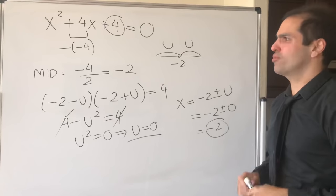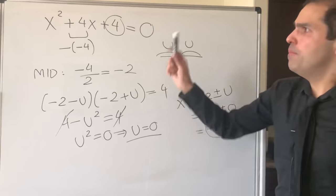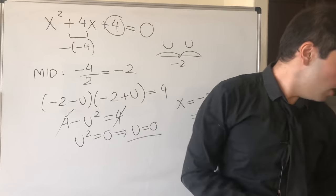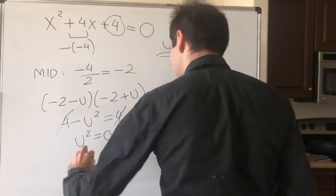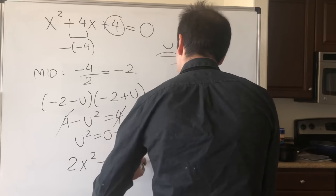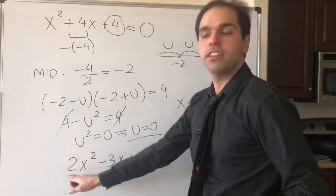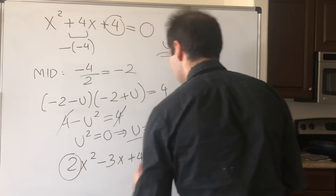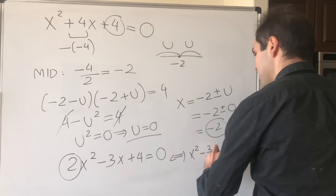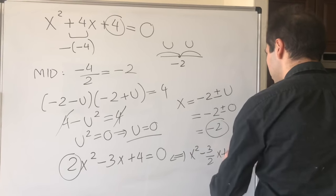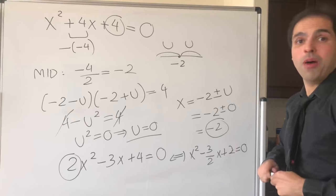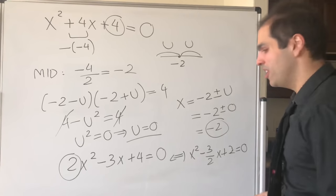Before I do a complex root example, just a little remark. Always make sure that the leading coefficient is 1. If it's not 1, let's say for the case 2x² - 3x + 4 = 0, just make sure to divide by this leading coefficient by 2. So this is the same thing as x² - (3/2)x + 2 = 0.